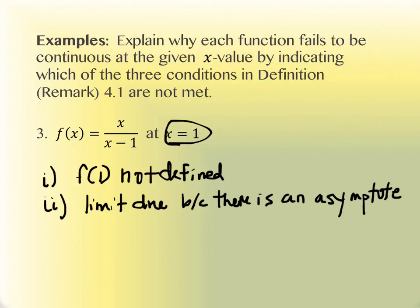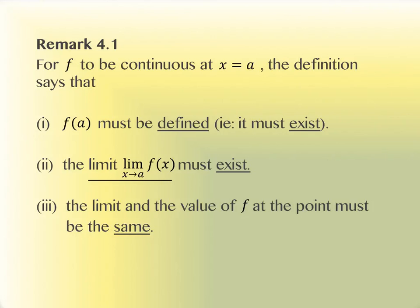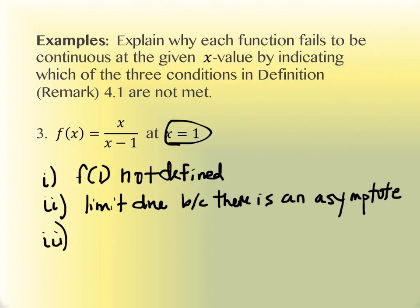The reason the limit does not exist is because there's an asymptote. You only get a hole in the graph when the numerator and denominator are reducible and you cancel a factor out. This one doesn't have that feature — I can't factor the numerator and denominator and remove that (x minus 1). So that's why there's not a hole, and by default there's an asymptote. Condition 3 automatically fails as well, because the limit doesn't exist and the value doesn't exist, so it's not applicable.